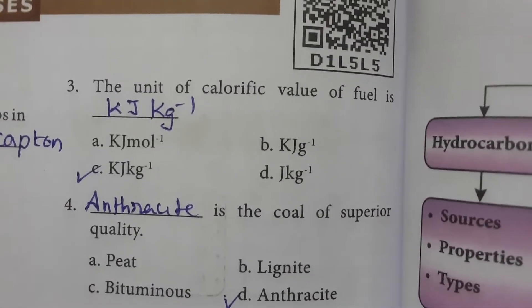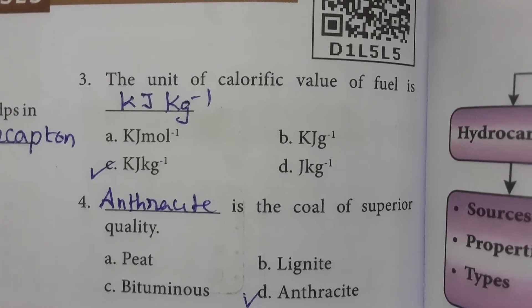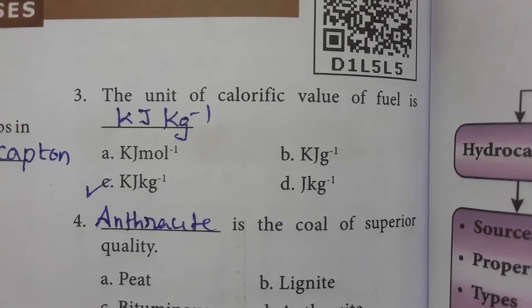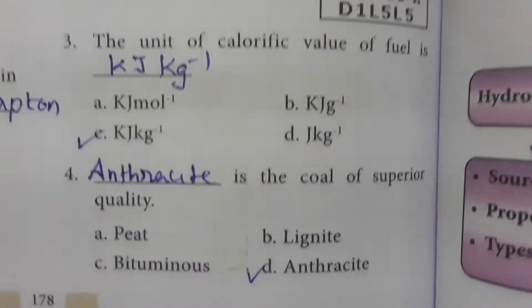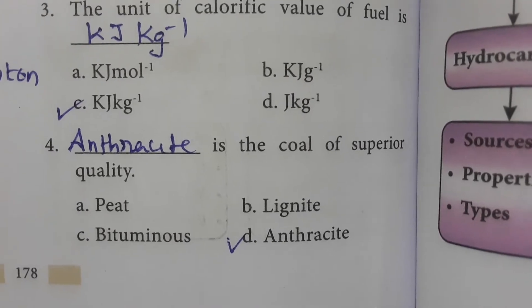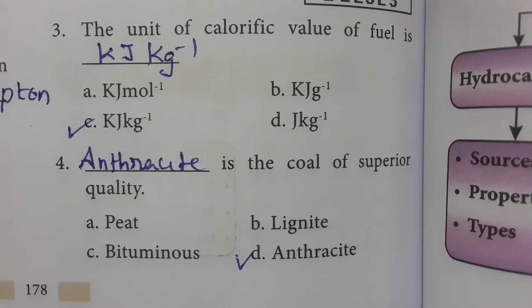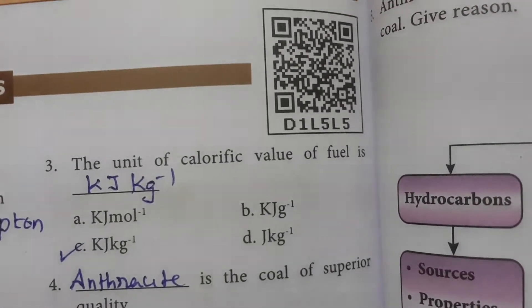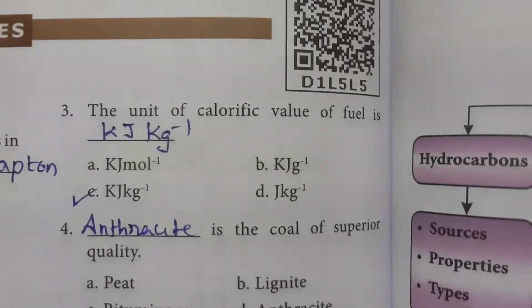The unit of calorific value of fuel is kilojoule per kilogram (kJ/kg or kJ kg⁻¹). Anthracite is the coal of superior quality. There are many types of coal, and anthracite is the one of superior quality.